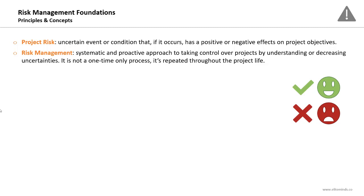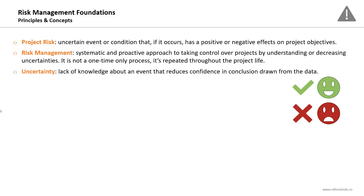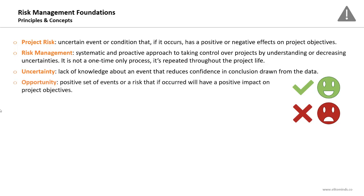The aim of conducting risk management activities is to reduce uncertainties. Uncertainty is the lack of knowledge about an event that reduces confidence in conclusions drawn from data. When you are not sure about information or about an event, this is uncertainty. For example, if it might rain heavily three weeks from today and you need to remove material stored outside your building — that's an uncertain event. This is uncertainty.